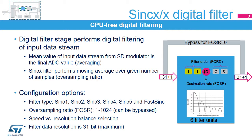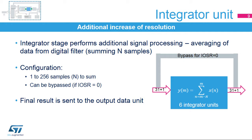The digital filter averages the 1-bit input data stream from the sigma-delta modulator into a higher resolution output but with slower data output. The digital filter is a sync X type with an order from 1 to 5; a fast sync type filter is also available. The oversampling ratio, which defines how many samples are averaged in a single filter run, can be selected in a wide range from 1 to 1,024. The internal filter resolution is 31-bit. The integrator unit performs additional simple averaging of data provided by the digital filter, summing from 1 to 256 samples, while maintaining the 31-bit internal integrator width.